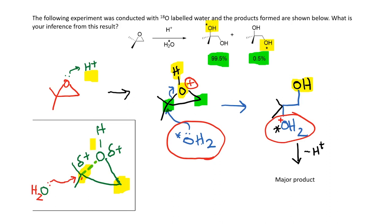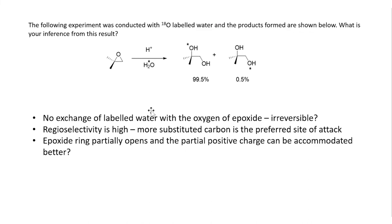There is no exchange going on between the water oxygen and the epoxide oxygen. This could mean that the attack here is an irreversible step — once you form this kind of intermediate, it does not close back and kick out water. If that happened, this oxygen could also attack and kick out water, and you would see the label ending up on both carbons. So based on this inference: first, there is no exchange of labeled water with the epoxide oxygen, meaning ring opening is likely irreversible; and second, the regioselectivity is quite high, with the more substituted carbon being the preferred site because the partial positive charge after protonation is better accommodated there.